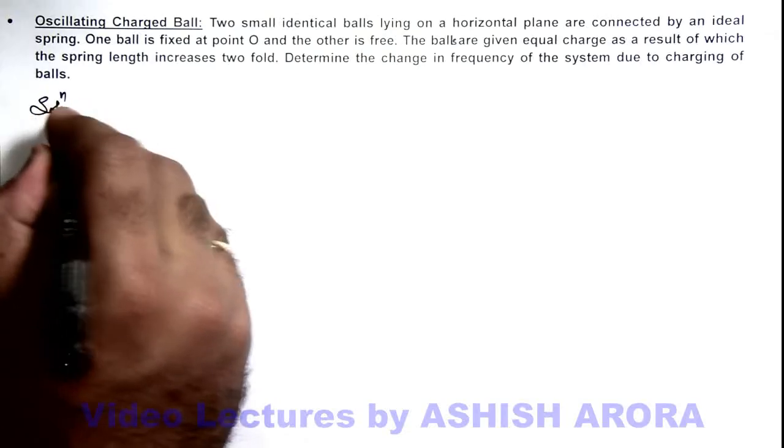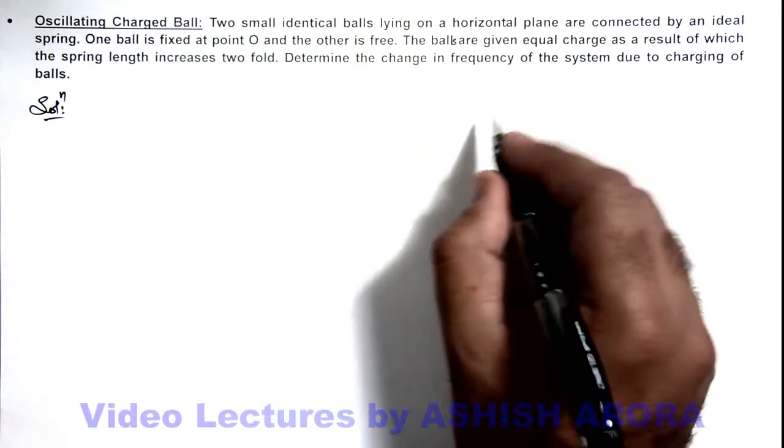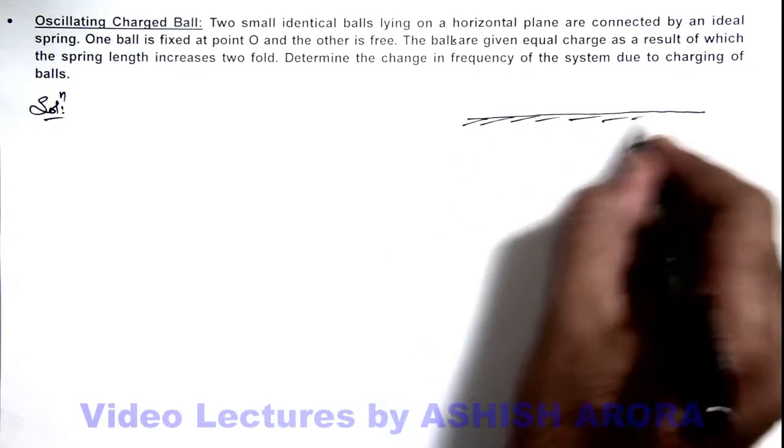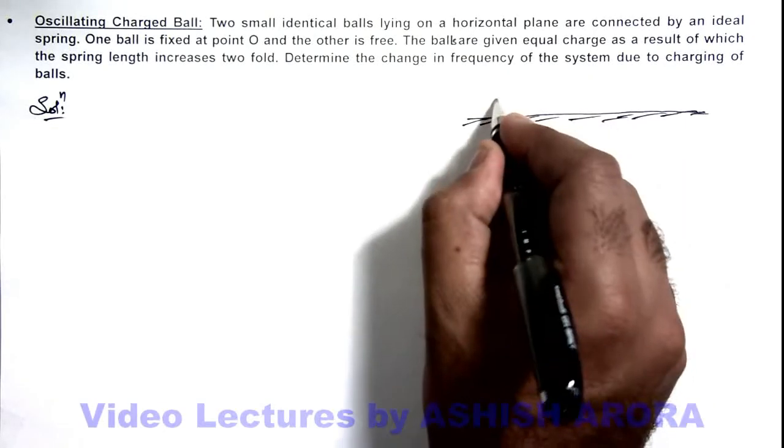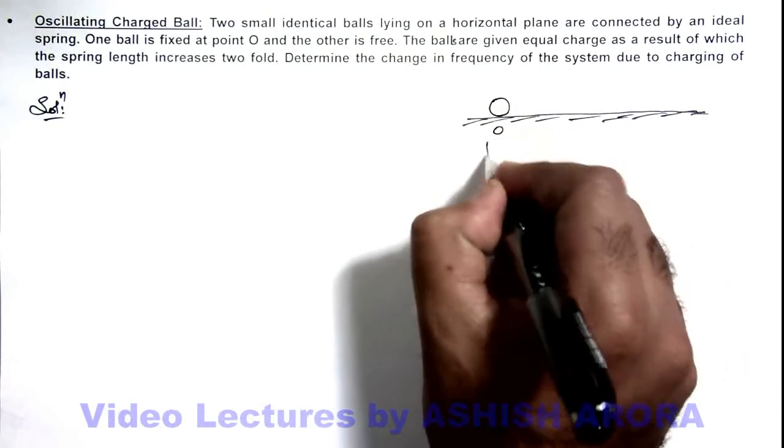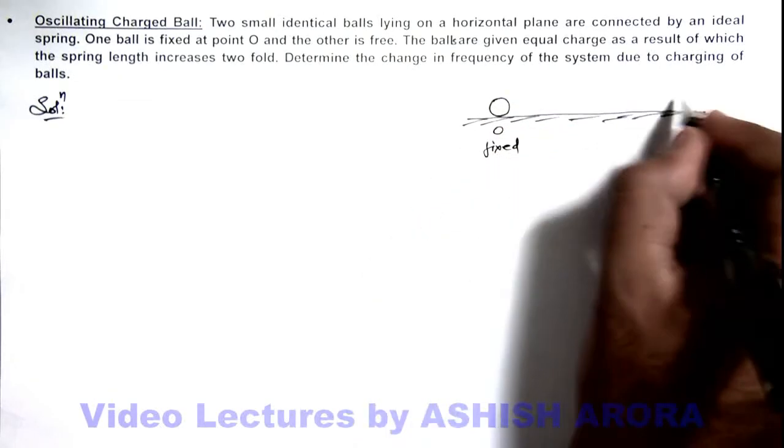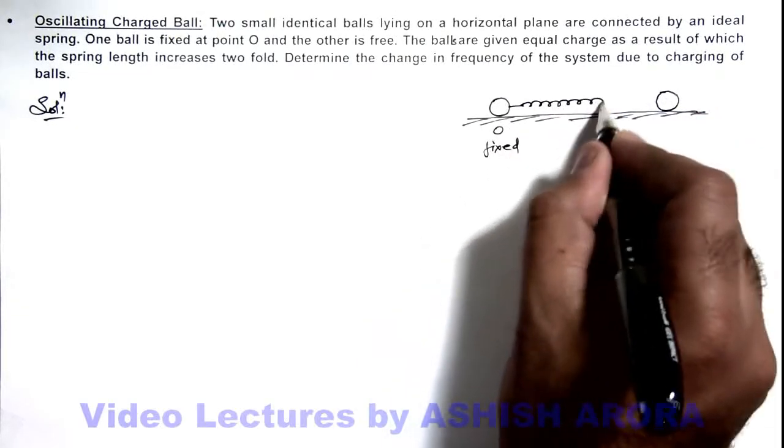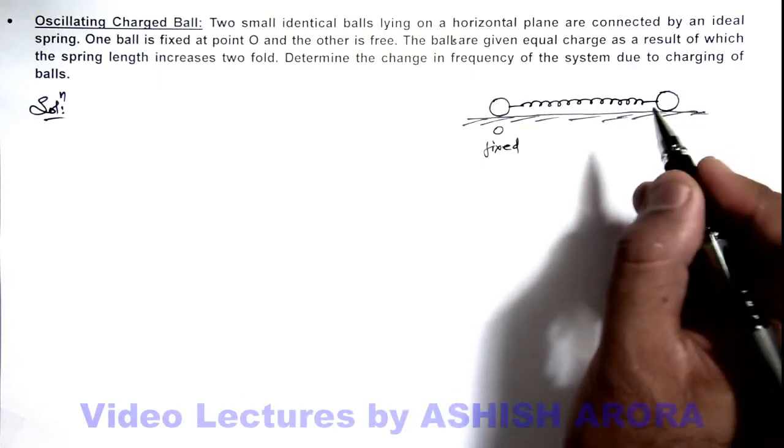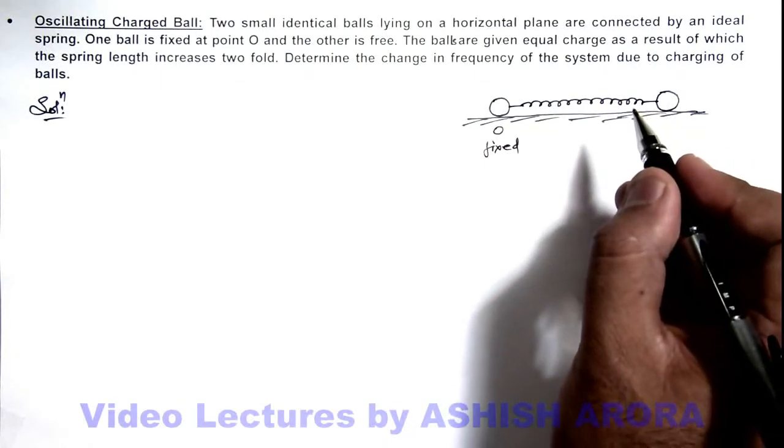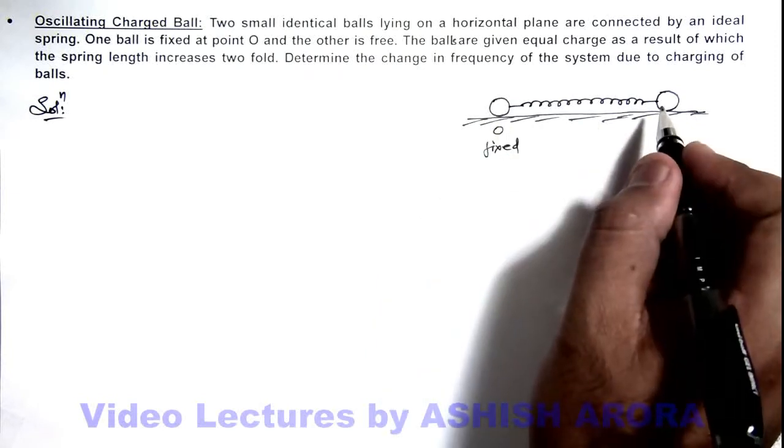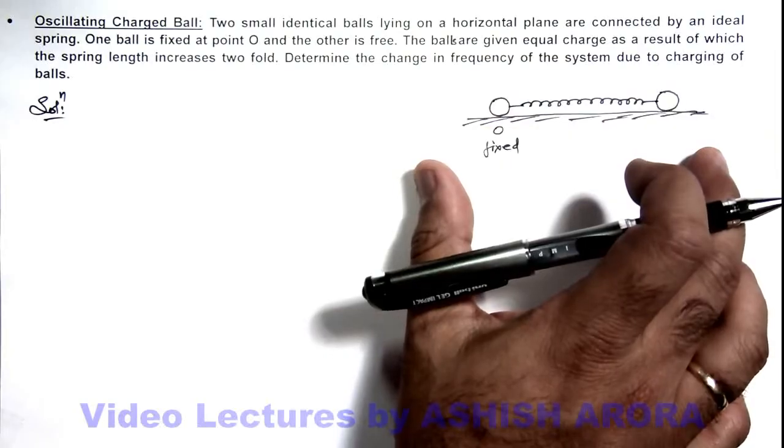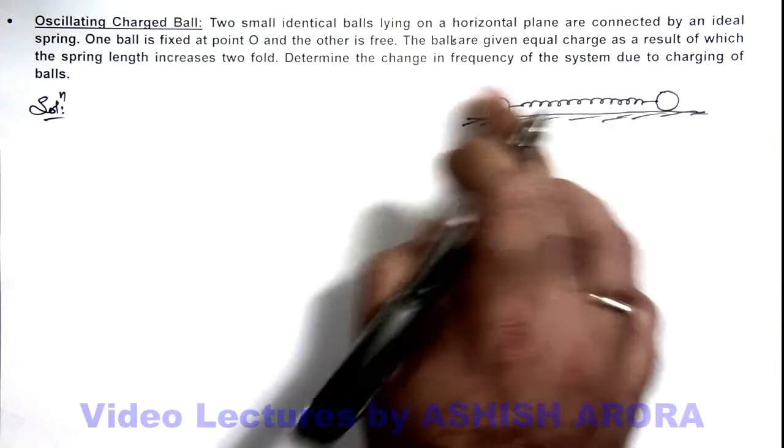Here if we first draw the situation, you can see there is a horizontal plane, and on this horizontal plane there are two balls. One is fixed at point O and other is kept free. These are connected by a spring which is right now in its natural length. If the balls are provided with equal charges, obviously due to repulsion between the balls the spring length will increase, and we are required to find the change in frequency of system.